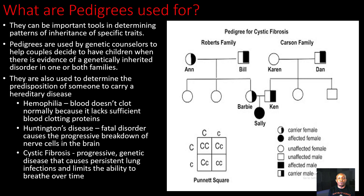What are pedigrees used for? Pedigrees can be important tools in determining patterns of inheritance of specific traits. They are used by genetic counselors to help couples decide to have children when there is evidence of a genetically inherited disorder in one or both families. And that's why they say be careful who you have children with. They are also used to determine the predisposition of someone to carry a hereditary disease.